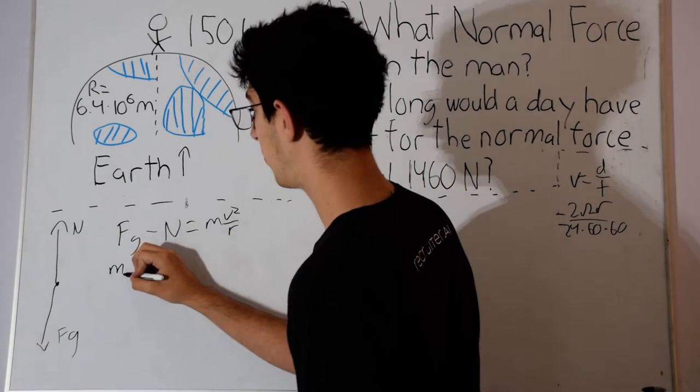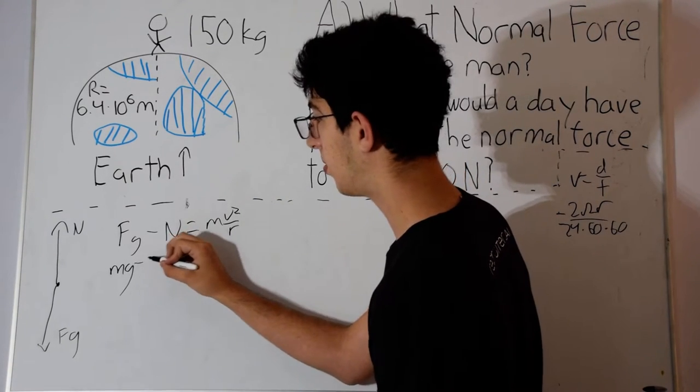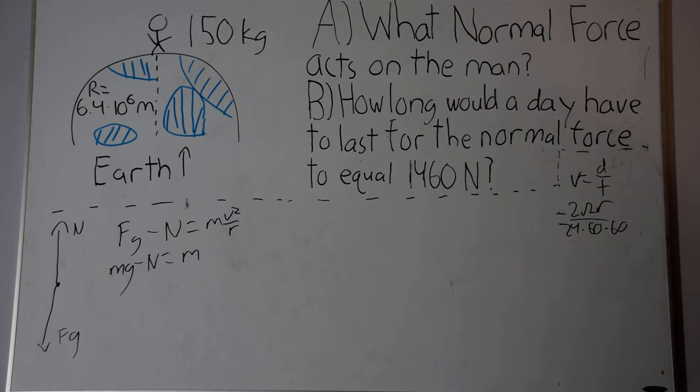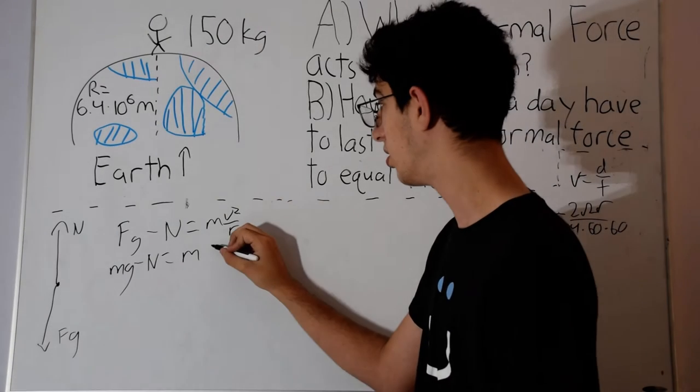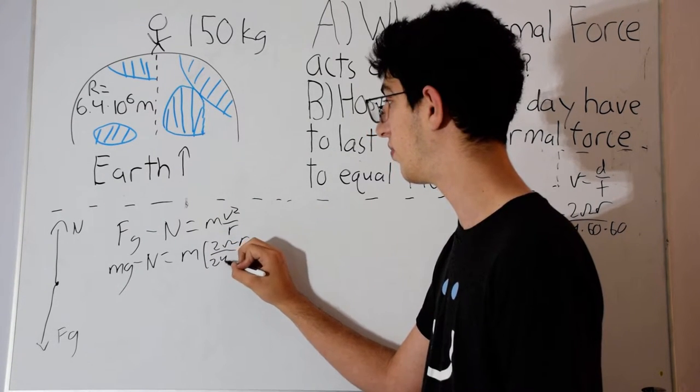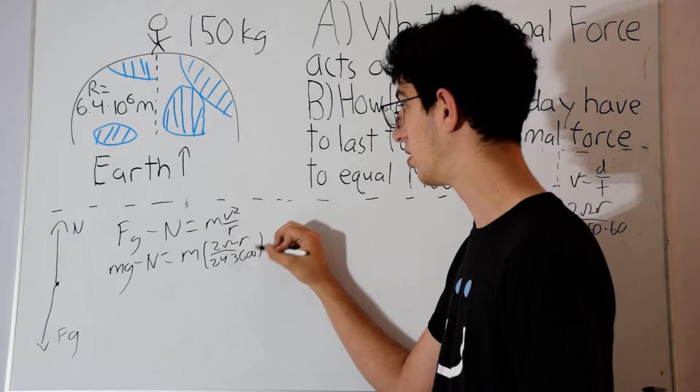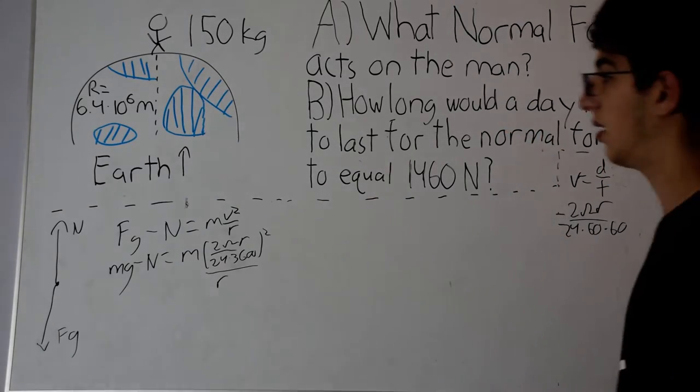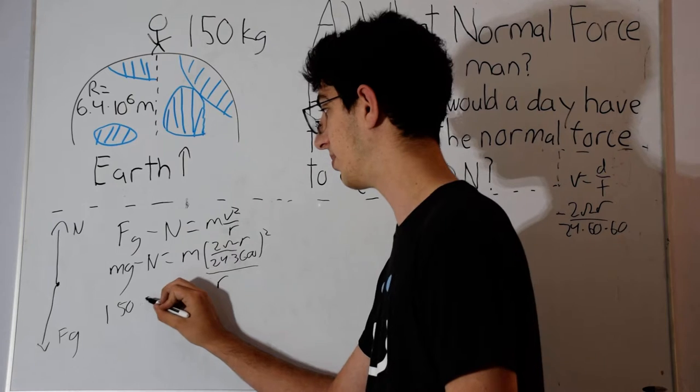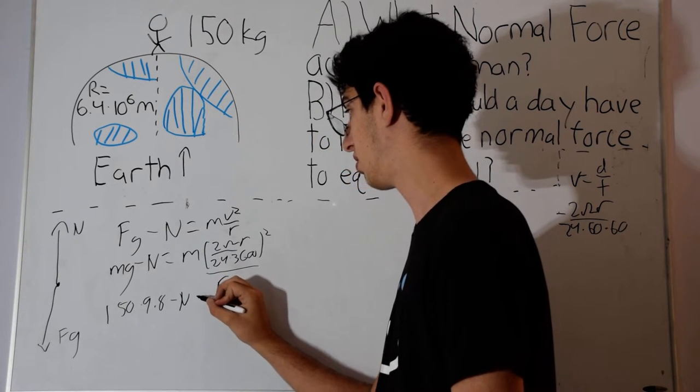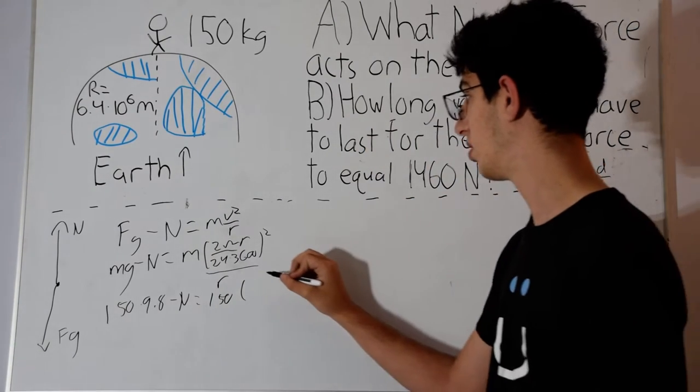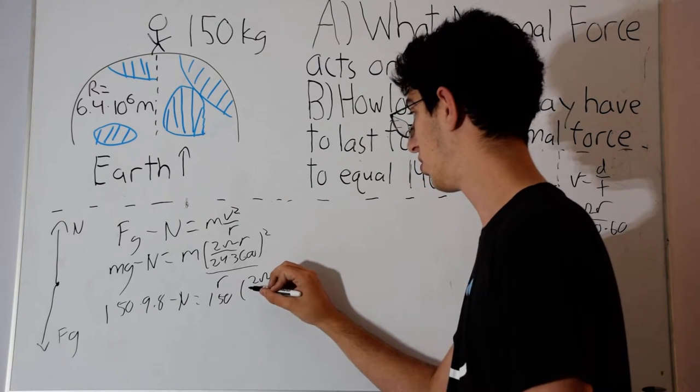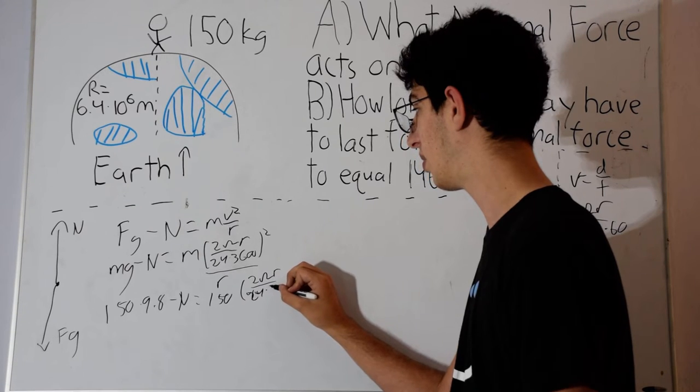Let's start putting in numbers. First I'll simplify the force of gravity to mg. The normal force is just my variable, still N. And mv squared over r becomes m times the velocity, which I just discussed is 2πr over 24 times 60 times 60, so 2πr over 24 times 3600 squared over r. And now we can continue putting in numbers. So mg is just 150 times 9.8 minus N equals 150 times 2π, and this r is just 6.4 times 10 to the 6 over 24 times 3600.